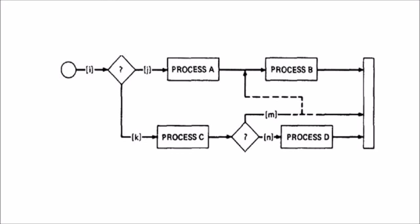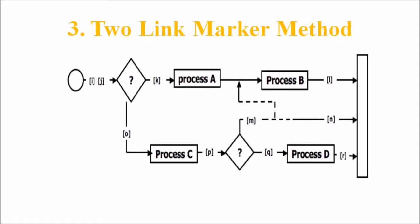The third one is two link marker method. The solution to the problem of a single link marker method is to implement two markers per link. One at the beginning of each link and one at the end of each link. The two link marker now specifies the path name and confirms both beginning and end of the link.